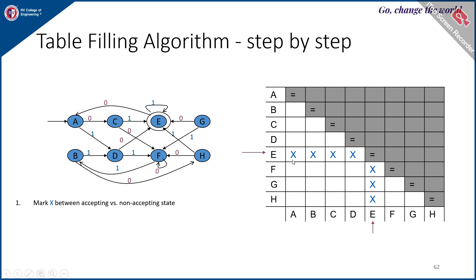E is the final state and A is the non-final state — they cannot be equivalent, so put a cross. B is non-final, E is final — cross. C is non-final, E is final — cross. D and E, and similarly E with F, G, H — all get a cross indicating they are not equivalent.